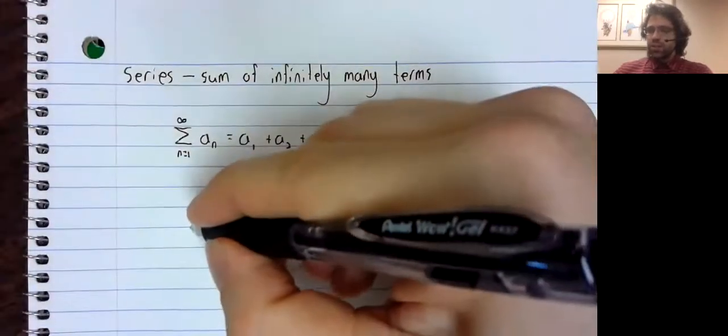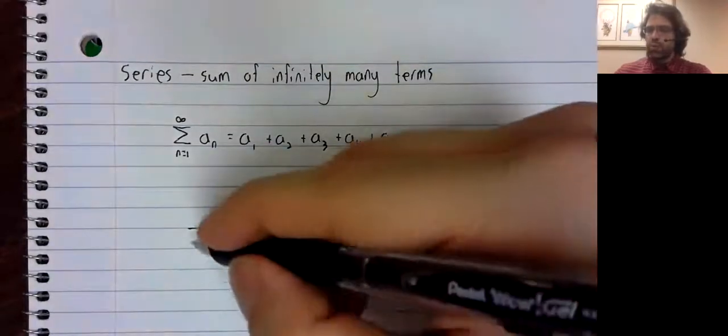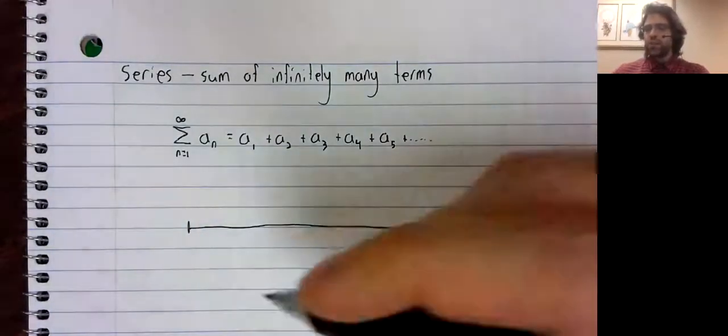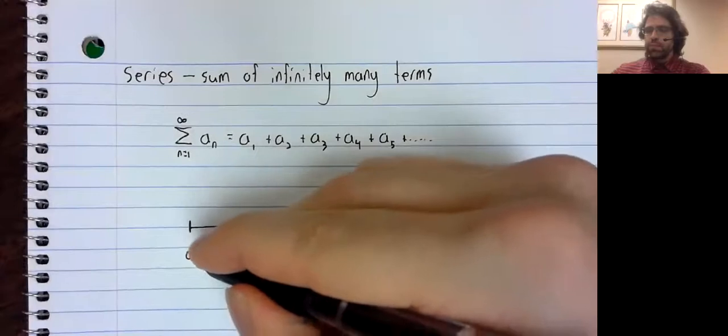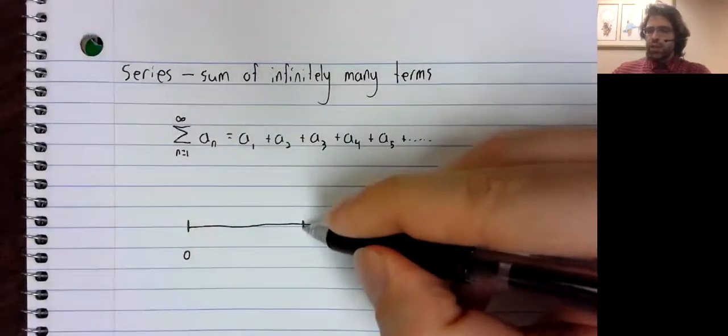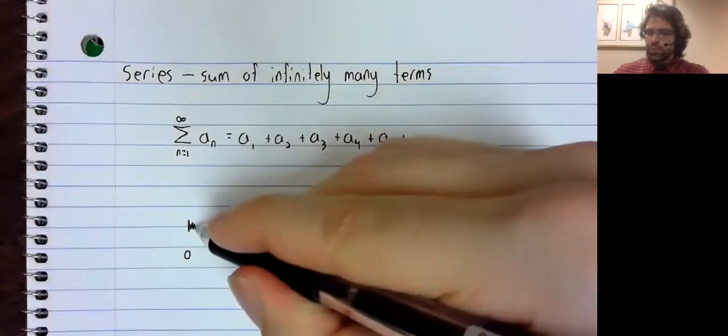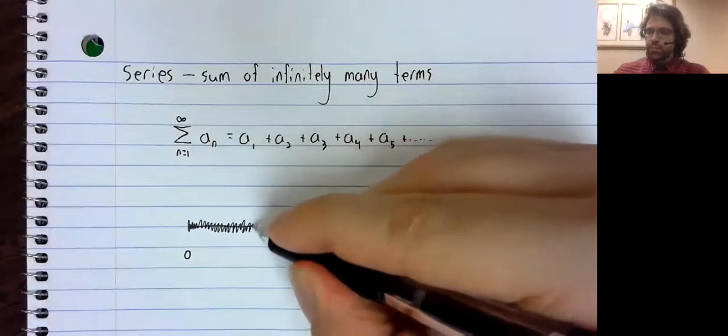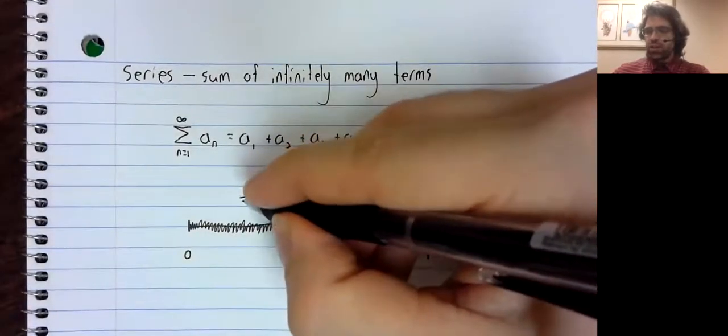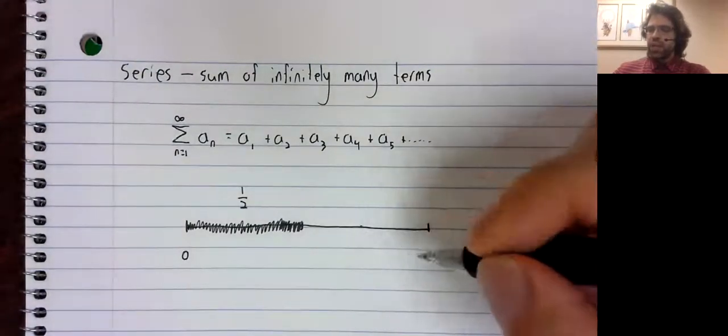But let's look at a simple example of how this might work. We'll look at an interval of length one. And we'll cut this interval into two. This interval has length one half.